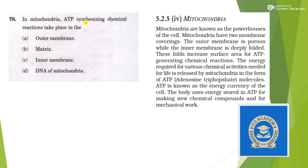Next: in mitochondria, ATP-synthesizing chemical reactions take place in which part? There are two membranes in mitochondria — the outer membrane is porous while the inner membrane is deeply folded. These folds increase surface area for ATP-generating chemicals. That means the inner folded membrane helps in generating ATP. So the answer should be the inner membrane — not the outer membrane.